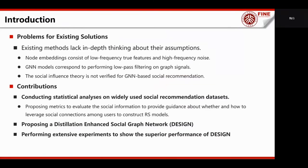Our main contributions in this paper are as follows. We provide in-depth revisiting of the social influence theory by conducting statistical analysis on four widely used social recommendation datasets. We propose metrics to evaluate social information quality, which can provide guidance on whether and how to leverage social connections among users to construct recommendation models. We propose a distillation-enhanced social graph network to improve social recommendation performance. To the best of our knowledge, we are the first to introduce knowledge distillation techniques to allow models to rely on different data sources in this task. We perform extensive experiments on real-world datasets showing the proposed model consistently outperforms state-of-the-art competitors.